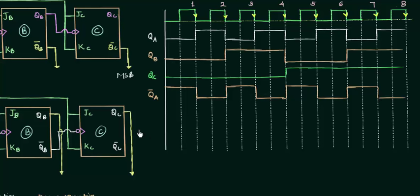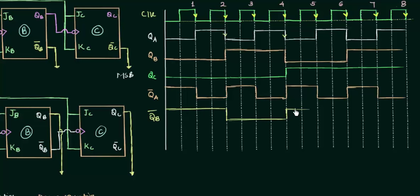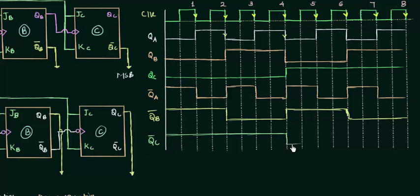For QB complement, the clock for flip-flop B is QA (not the original clock). You can either analyze it using QA as the clock or simply take the complement of the QB waveform directly. QB complement starts at 1, then goes low, then back to 1, then 0. For QC complement: QC was low so QC complement is high, then QC goes high so QC complement goes low.